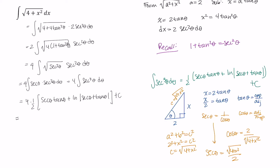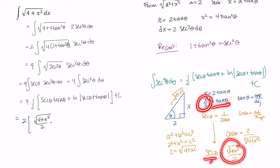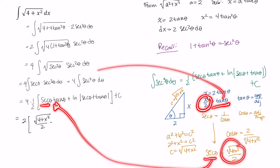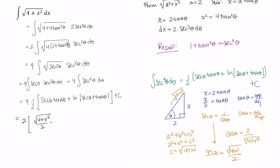We just need to clean this up now. 4 times one half is just 2. Everywhere I see secant theta, I write the square root of 4 plus x squared divided by 2. Everywhere I see tangent theta, I write x over 2. So for tangent theta I have x over 2, and then I add the natural log of the square root of 4 plus x squared divided by 2, plus x over 2, plus C.